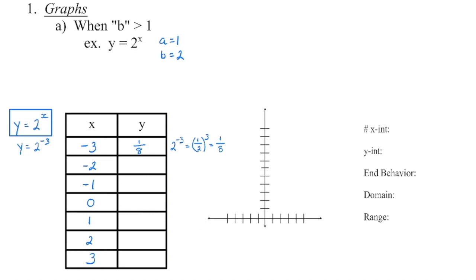When x is negative 3, y is 1 eighth, which is 0.125, so just go a little bit above the x-axis. Now x is negative 2: we have 2 to the power of negative 2, we reciprocate the base which flips the sign on the exponent, so now we have 1 quarter. When x is negative 2, y is 1 quarter — about a little bit higher than 1 eighth.